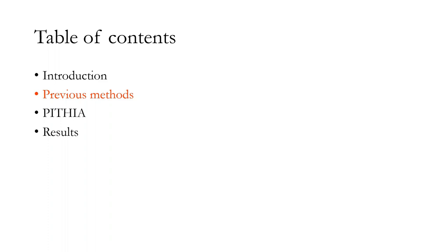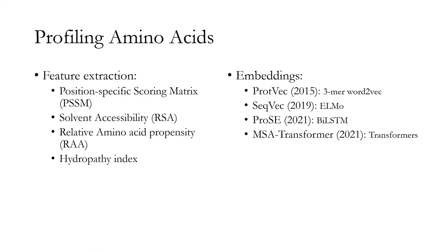Let us talk about previous methods. Feature selection could be considered as one of the main steps in computational methods. Here we name some of the most used features: position-specific scoring matrix or PSSM, which is computed using BLAST; solvent accessibility or RSA; relative amino acid propensity or RAA; hydropathy index; and others.